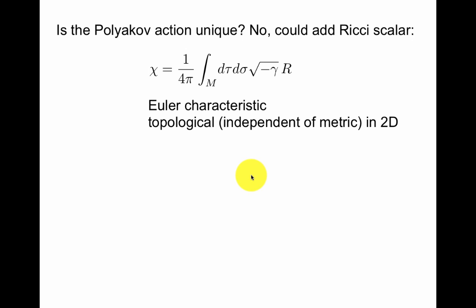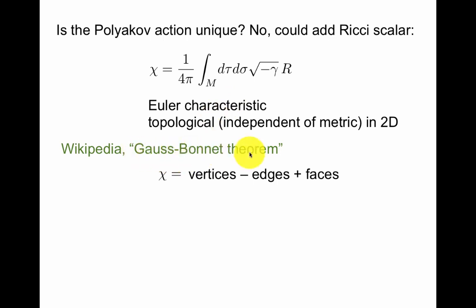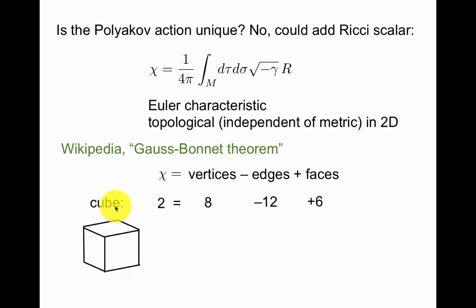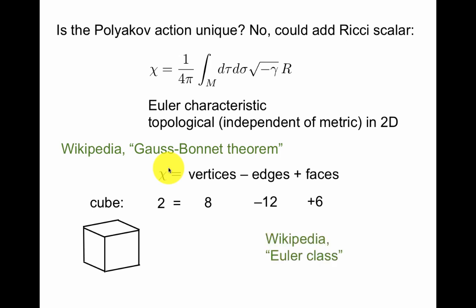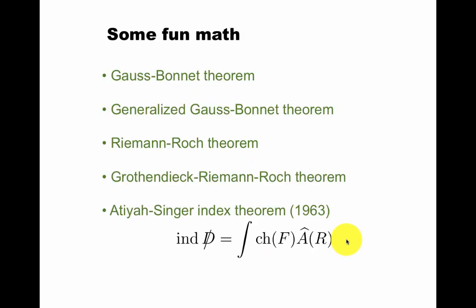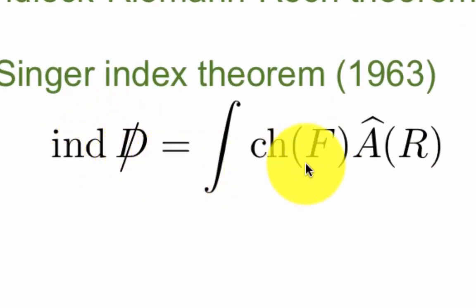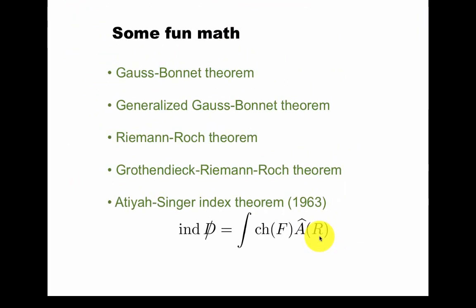As a short bonus question: is the Polyakov action unique? No — we could add the worldsheet Ricci scalar to it. However, this is topological: it doesn't depend on the metric and doesn't contribute to equations of motion, because in two dimensions it's the Euler characteristic. Euler didn't define the Euler characteristic in this way. It follows from the Gauss-Bonnet theorem that Euler's definition — which is more like the topological definition we would use today — is equivalent to this geometrical definition. For example, a cube has Euler characteristic 2: it has 8 vertices, 12 edges, and 6 faces. If you're interested, look at the definition of the Euler characteristic and the Gauss-Bonnet theorem. This leads to a whole slew of mathematics — for example, the Euler class is a natural generalization of this object to vector bundles. There's also the generalized Gauss-Bonnet theorem, the Riemann-Roch theorem, and the Atiyah-Singer index theorem, which states that the index of the Dirac operator is the integral of the Chern class of the vector bundle times the A-roof genus of the curvature — but this is not necessary to understand in detail right now.